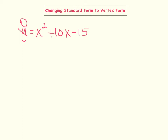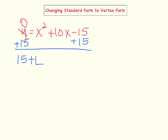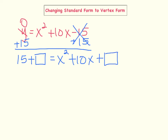Our first step will be to move the c value, which in this case is negative 15, to the other side of the equation. We're doing this so that we can make room to create our perfect square trinomial. So I will add 15 to both sides. On the left side I have 15, but instead of writing equals, I'm going to say plus a square — making room for the perfect square we're about to create. So I have 15 plus square equals x squared plus 10x, since the negative 15 plus 15 cancels out.